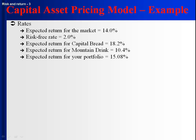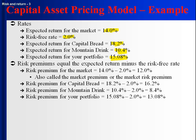Here's a helpful reference. The expected return on the market is 14%, the risk-free rate is 2%. Capital Bread's expected return is 18.2%, Mountain Drink is 10.4%, and our portfolio is 15.08%. The risk premium is always the expected return minus the risk-free rate. So the market risk premium is 14 minus 2, which is 12%. Capital Bread's risk premium is 18.2 minus 2, which is 16.2%. Mountain Drink's is 10.4 minus 2, which is 8.4%. The portfolio's risk premium is 15.08 minus 2, which is 13.08%.